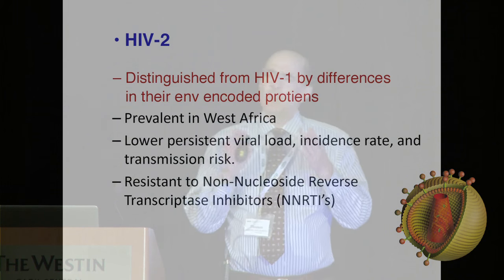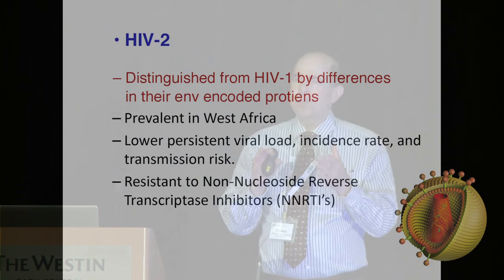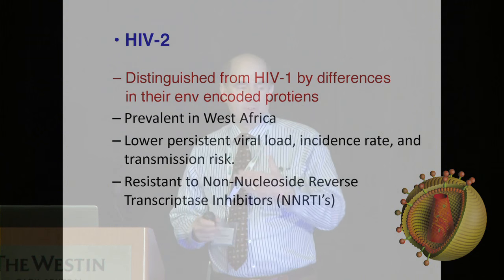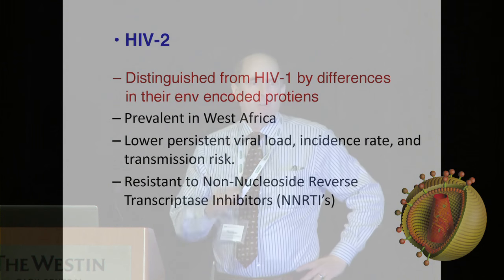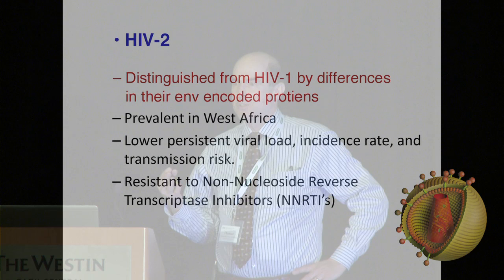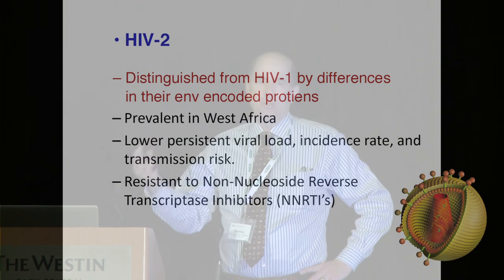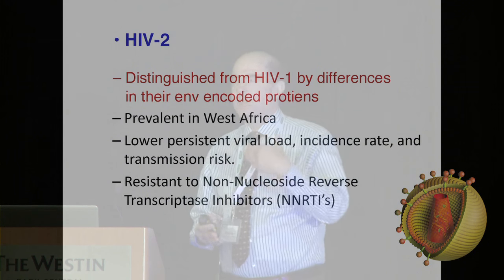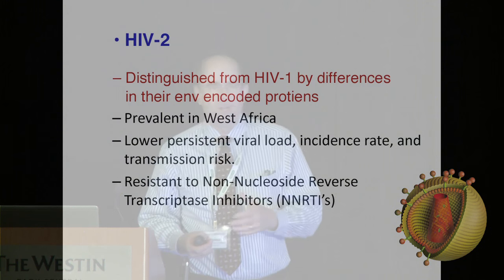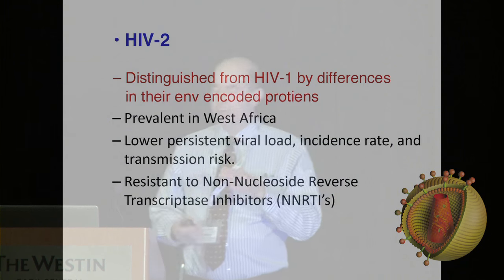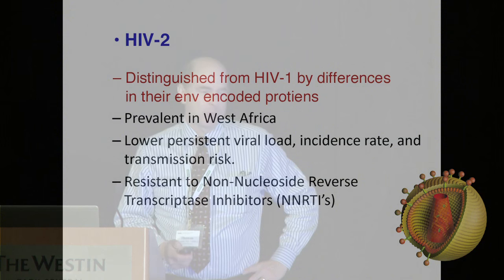HIV2 is similar to HIV1, but the disease it causes isn't quite the same — it's a little less virulent and is primarily found in West Africa. In the state of Ohio, we've had one case of HIV2 as an example, while in Southern California and New York City there is more HIV2 than in Ohio.